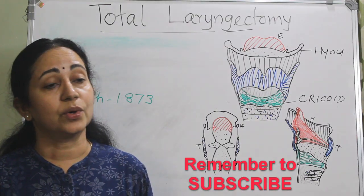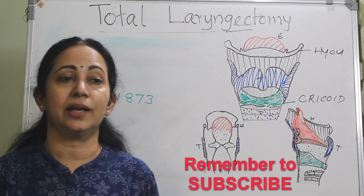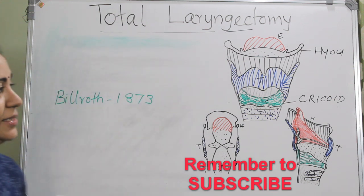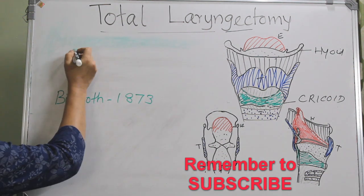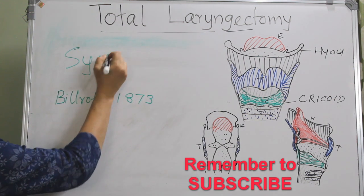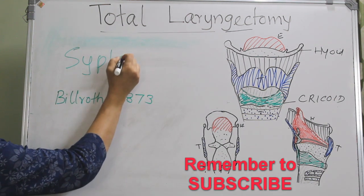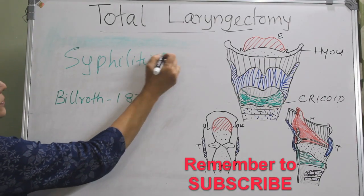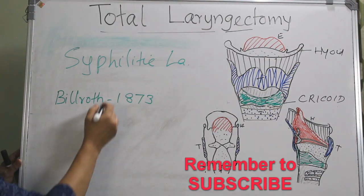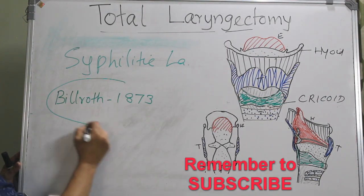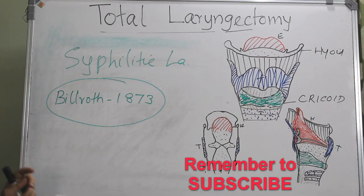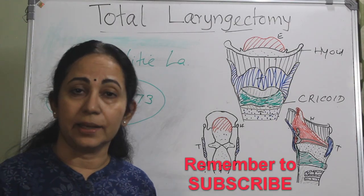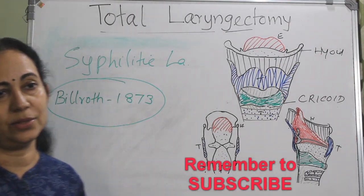Interestingly, the indication for the first reported laryngectomy was syphilitic larynx. And Bill Roth in 1873 performed the first total laryngectomy for malignancy of the larynx.